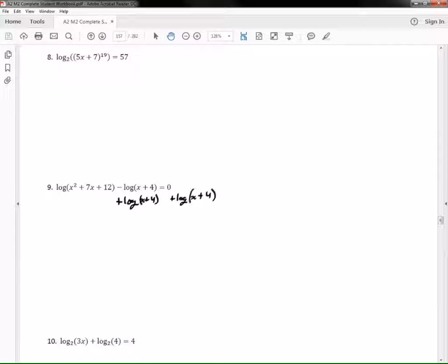Okay, I would get this. I would have log of x plus four on the right side, and on the left side I would have log of x squared plus seven x plus 12.